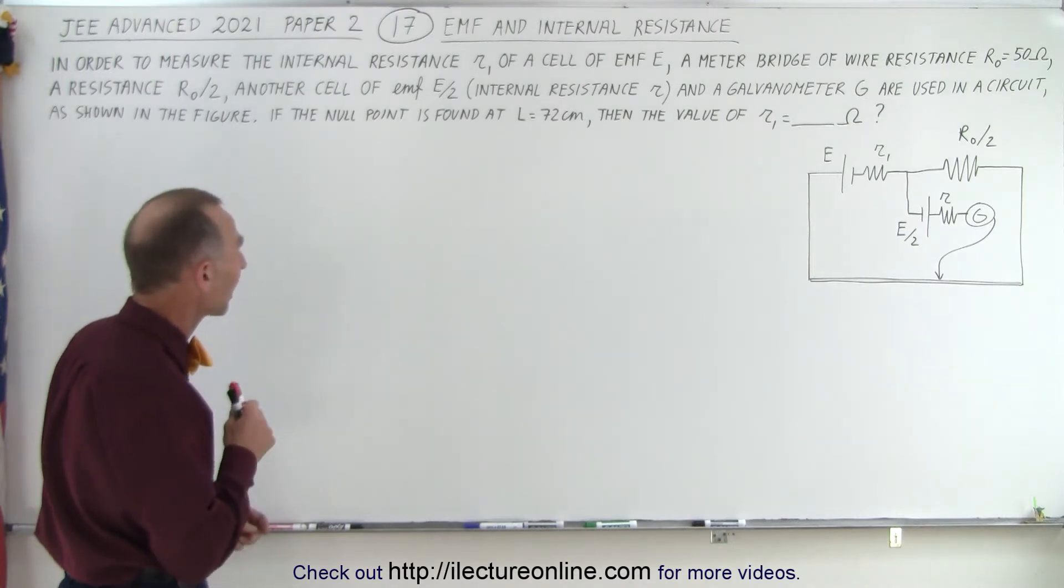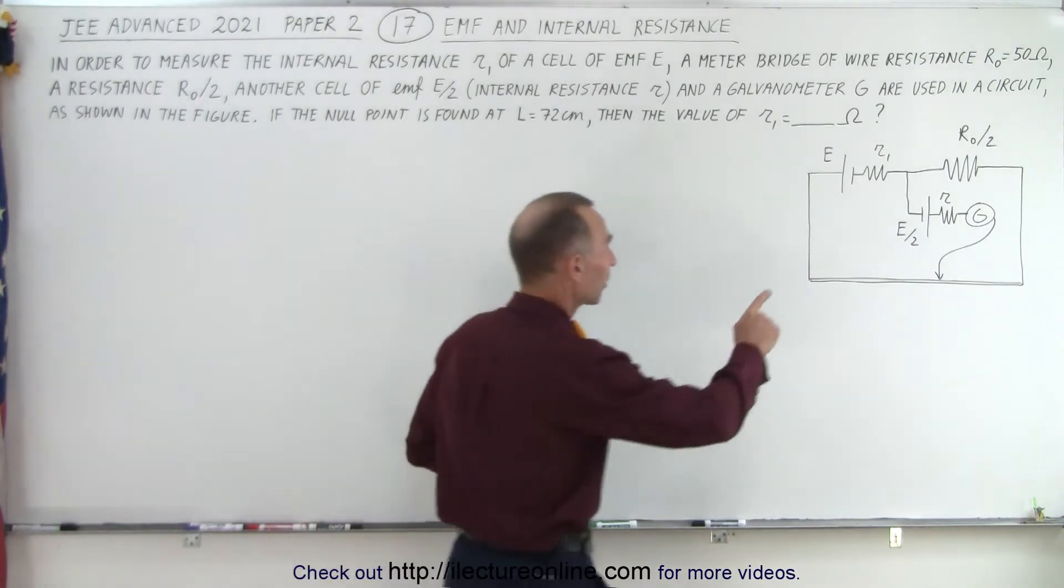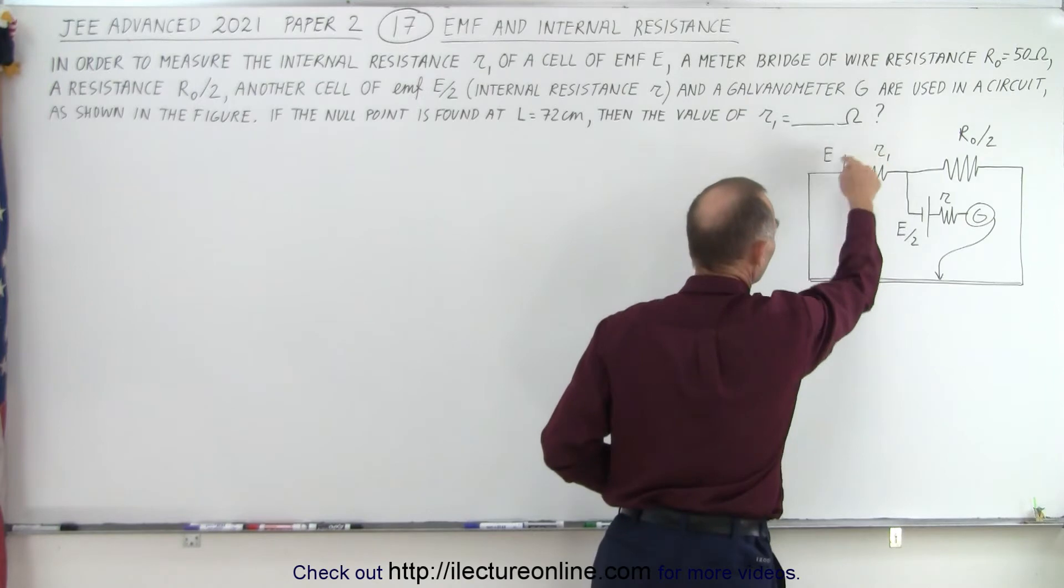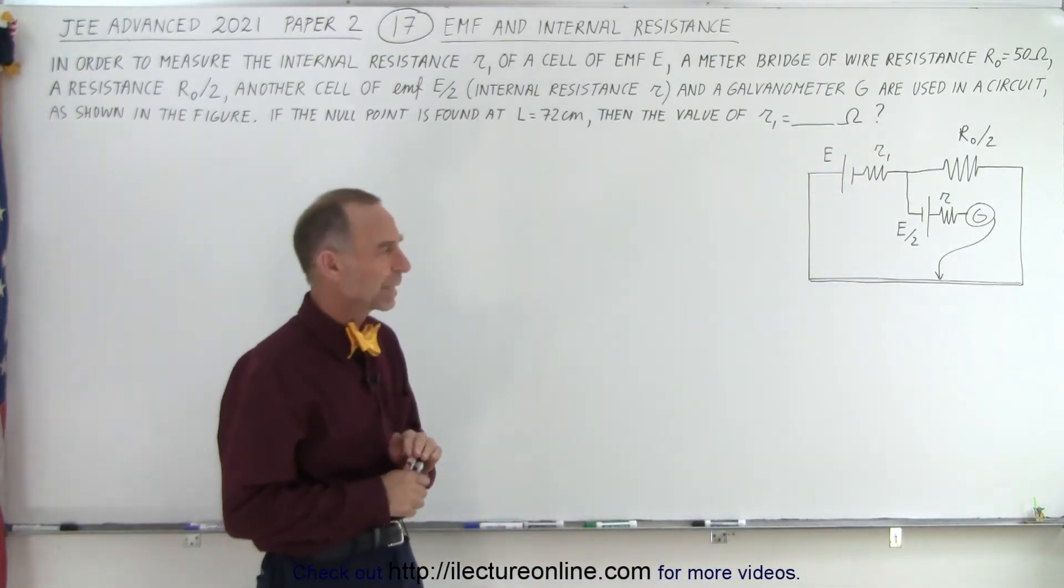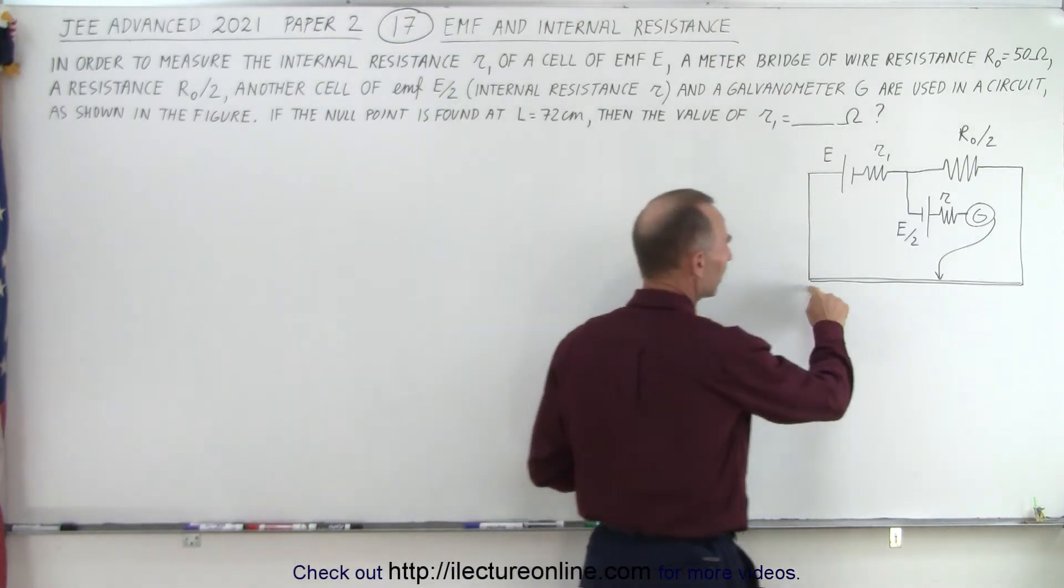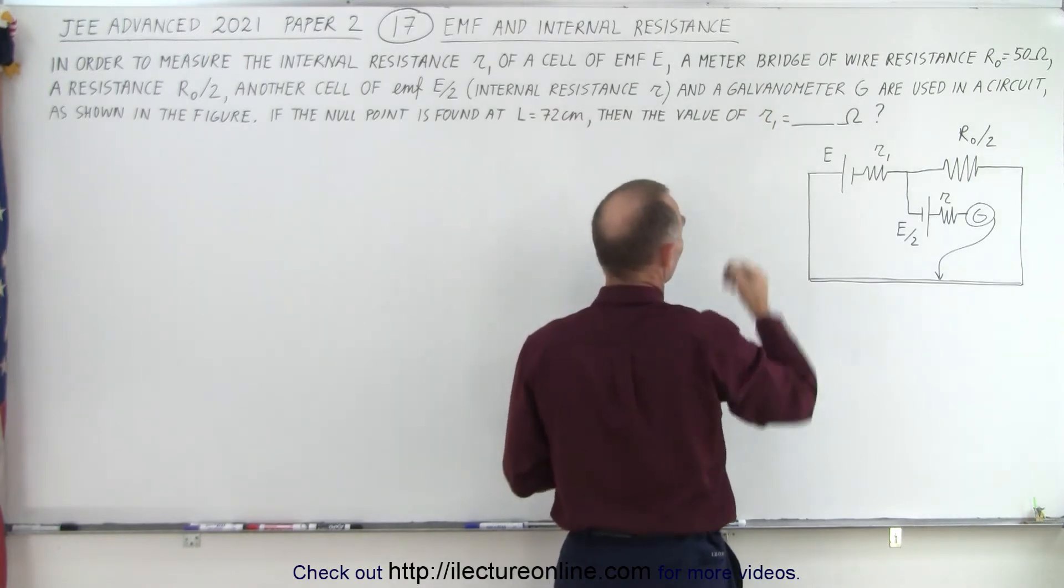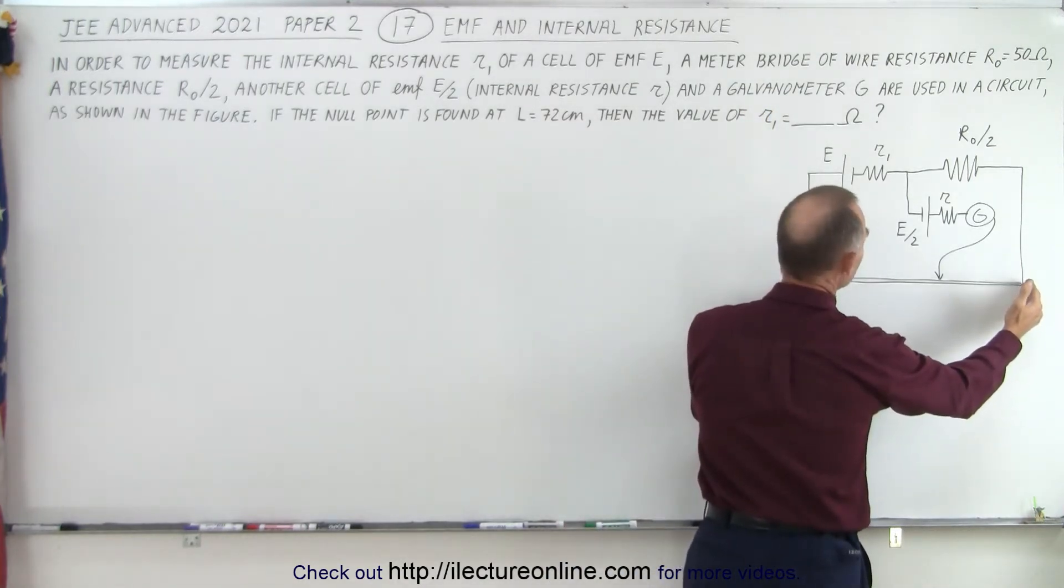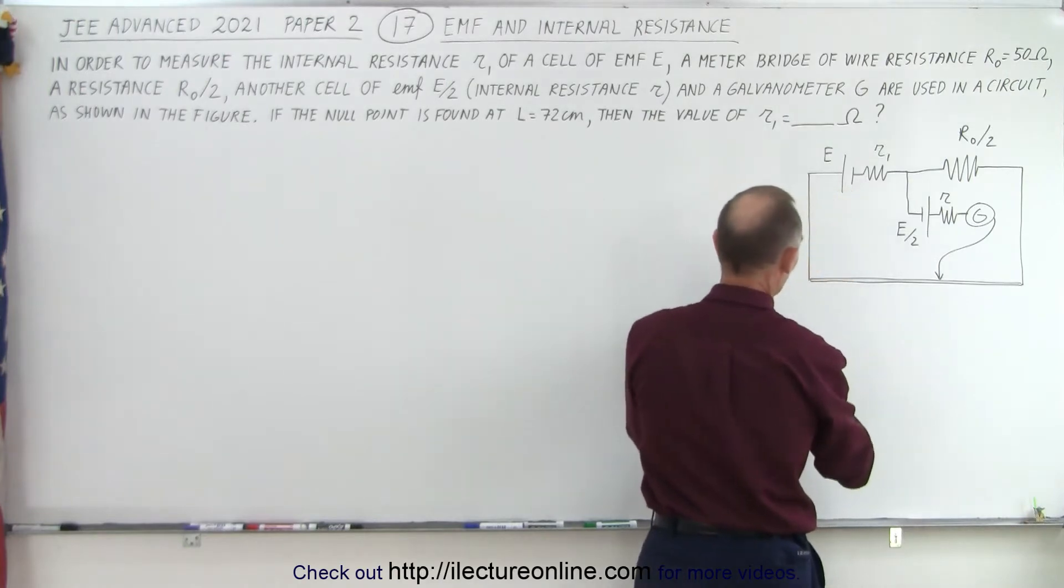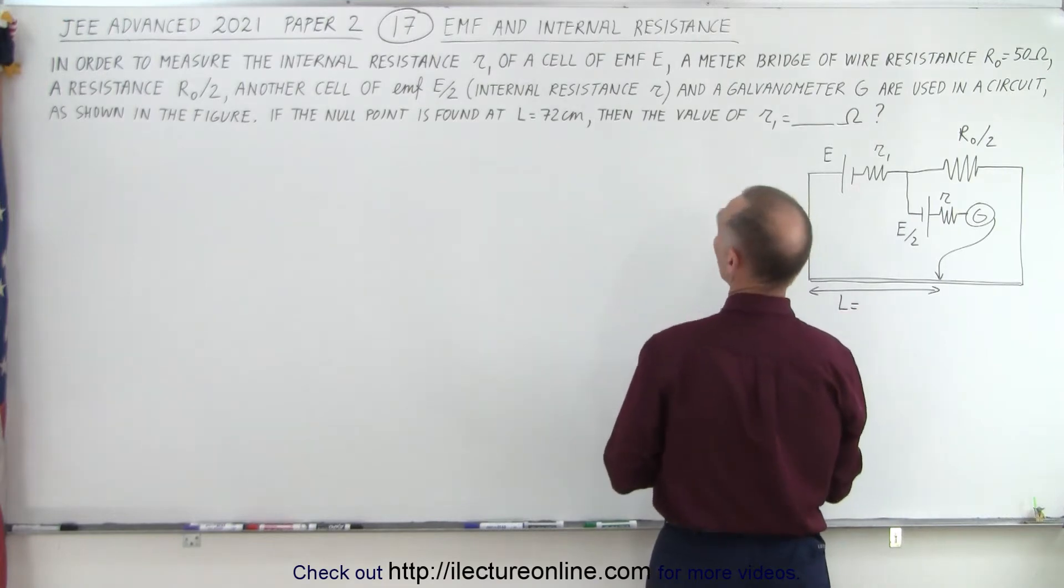If the null point is found at L equals 72 centimeters, then the value of R1 equals what? Essentially, we're trying to figure out the internal resistance of this particular EMF. I looked at the drawing and realized that this thing at the bottom here is what they call the meter bridge. Essentially, this was a meter long and this section right here, marked on the drawing as section L, is equal to 72 centimeters.